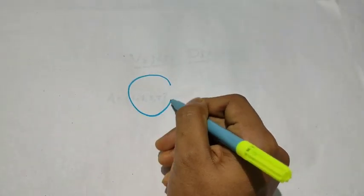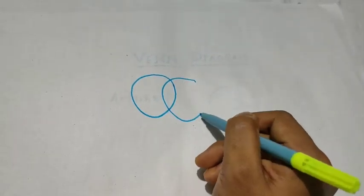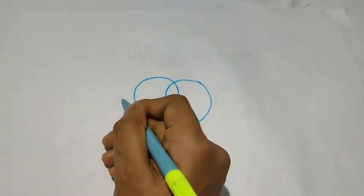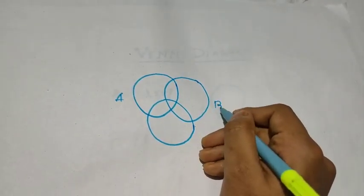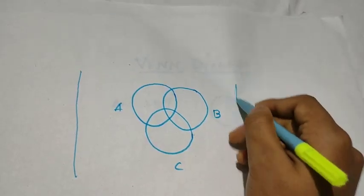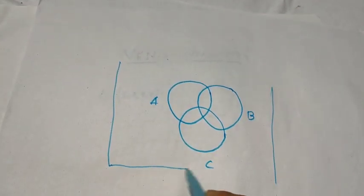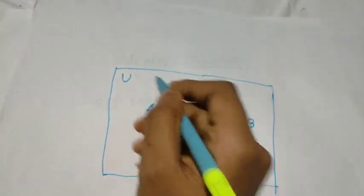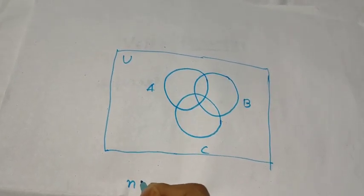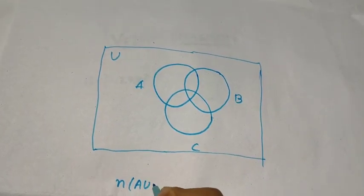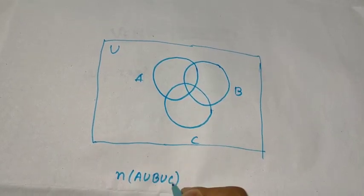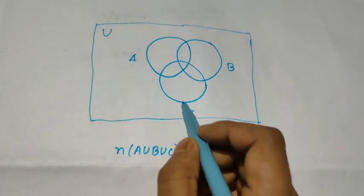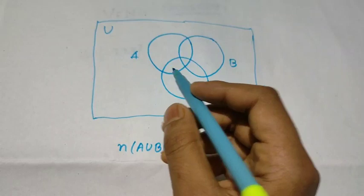Suppose this is A, this is B, this is C. This is the Venn diagram of N(A∪B∪C). And if we have to find the formula, we have to find it using this Venn diagram. Let us see how to do this.